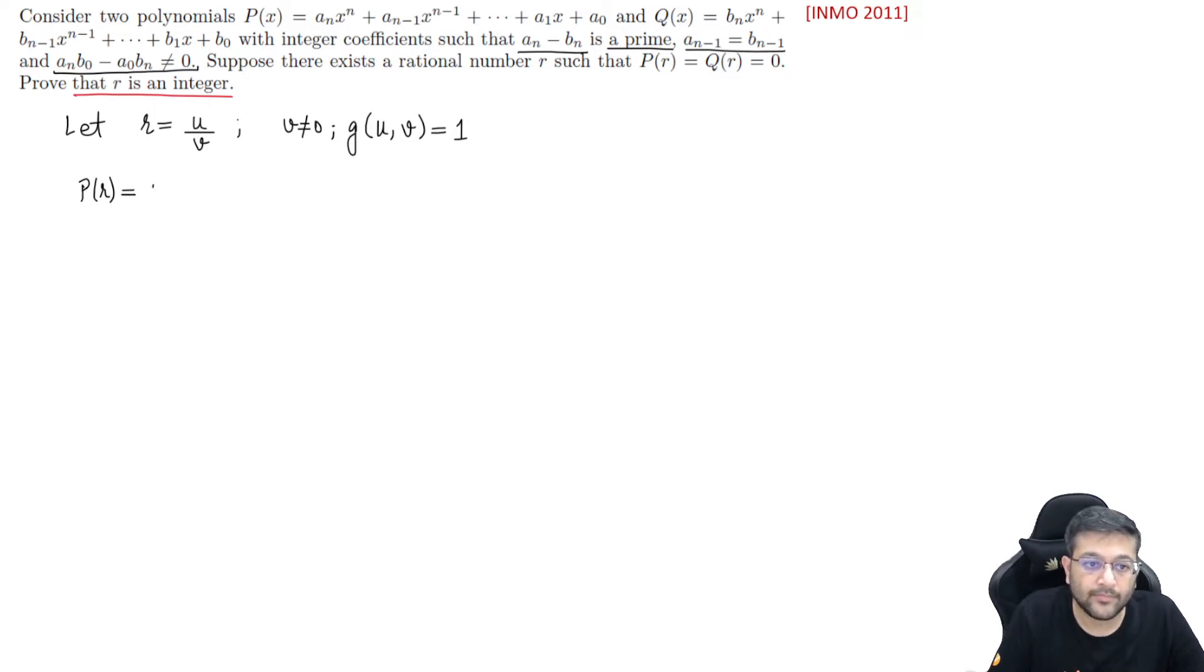What does P(r) equal to 0 mean? So P(r) = a_n (u/v)^n + a_{n-1} (u/v)^{n-1} + ... + a_1 (u/v) + a_0 = 0. After taking the LCM and simplifying, I get a_n u^n + a_{n-1} u^{n-1} v + ... + a_1 u v^{n-1} + a_0 v^n = 0.